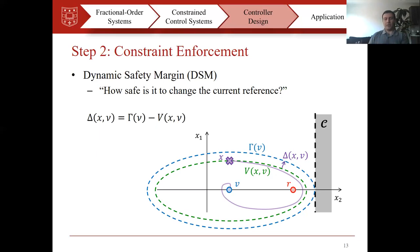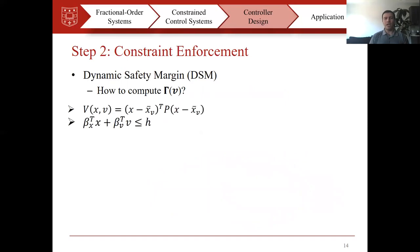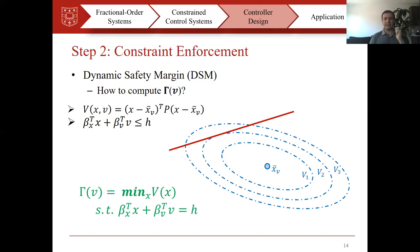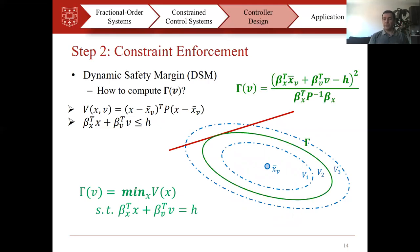To compute the dynamic safety margin, we need to compute gamma — the biggest Lyapunov level set. Our Lyapunov function is quadratic and the constraints are linear, so we find gamma by solving an optimization problem. Interestingly, this is a convex optimization problem because the cost function — the Lyapunov function — is convex, and the linear constraints are also convex. We can therefore find a closed-form solution for this optimization problem. So in order to compute the dynamic safety margin, we just use this closed-form solution.